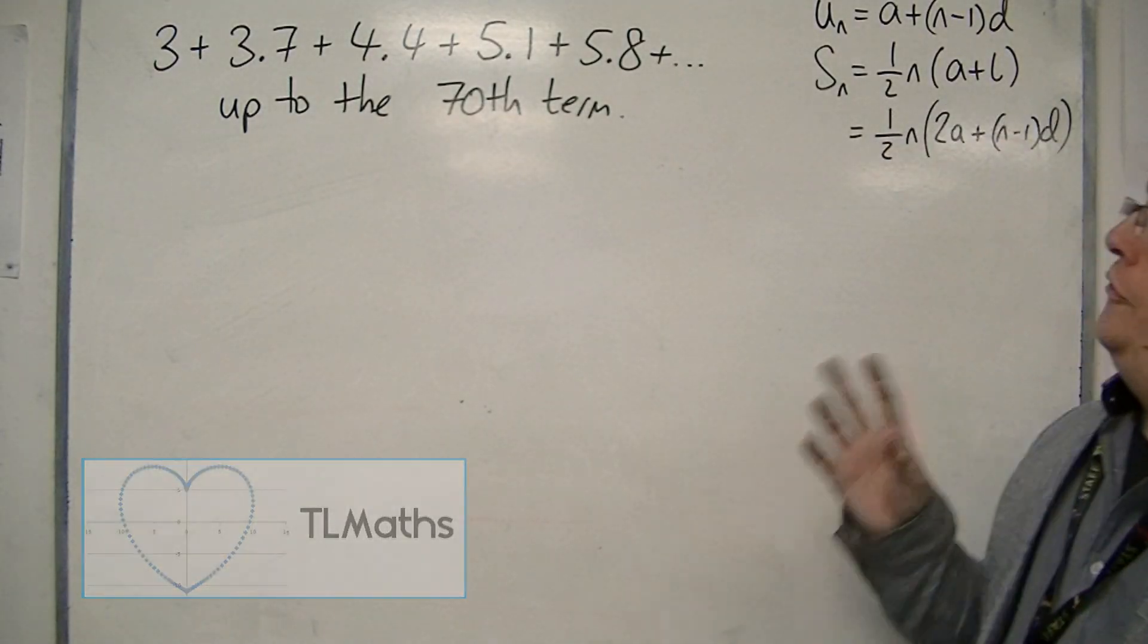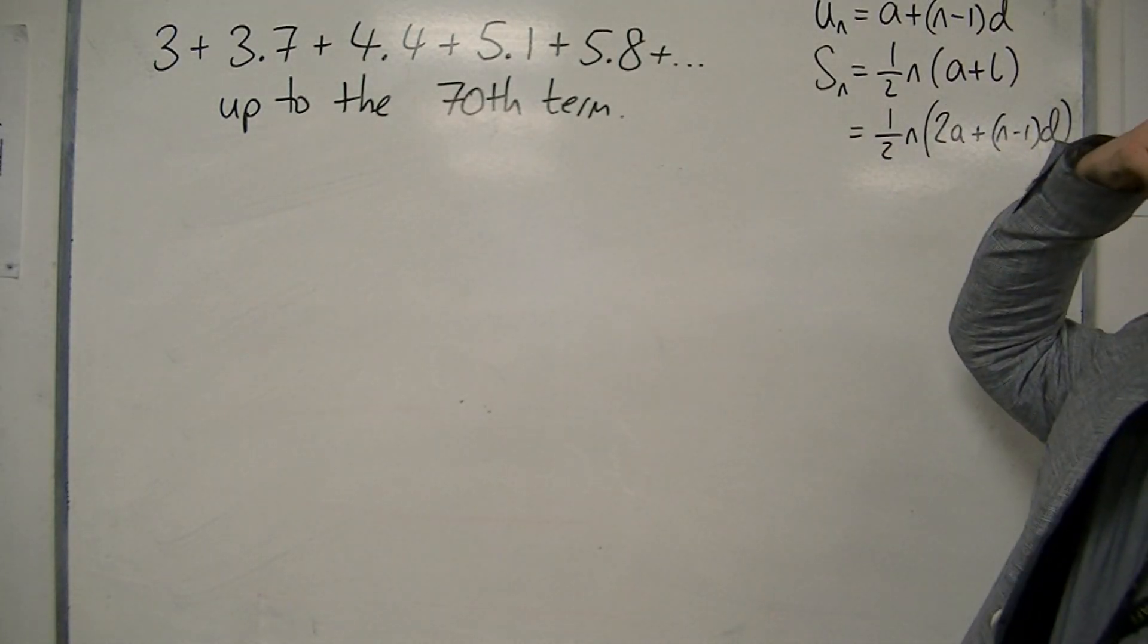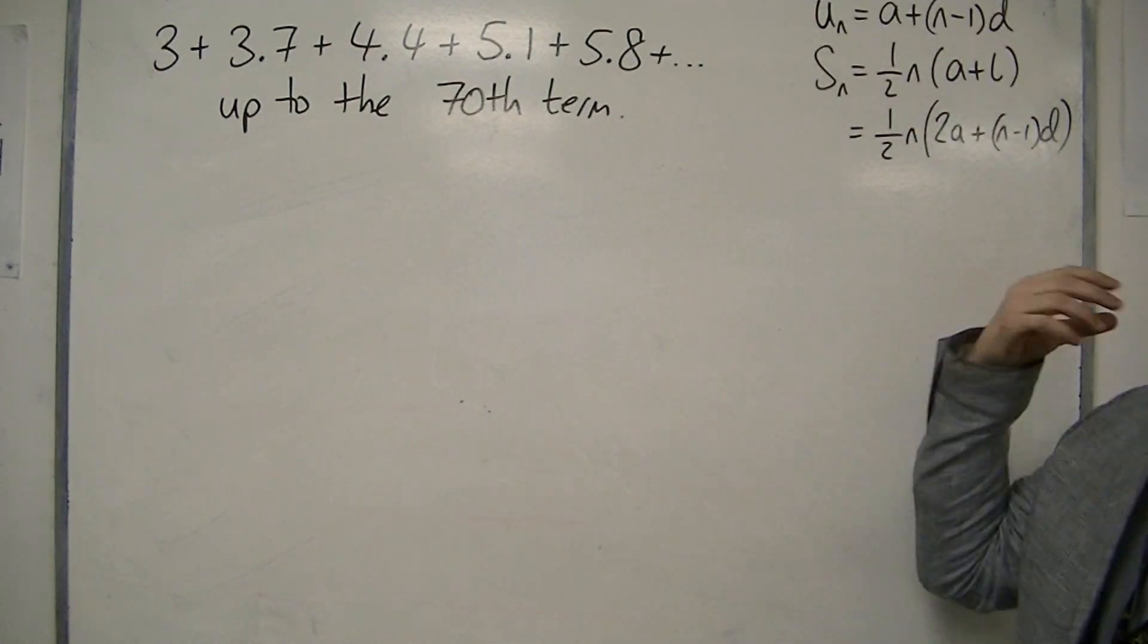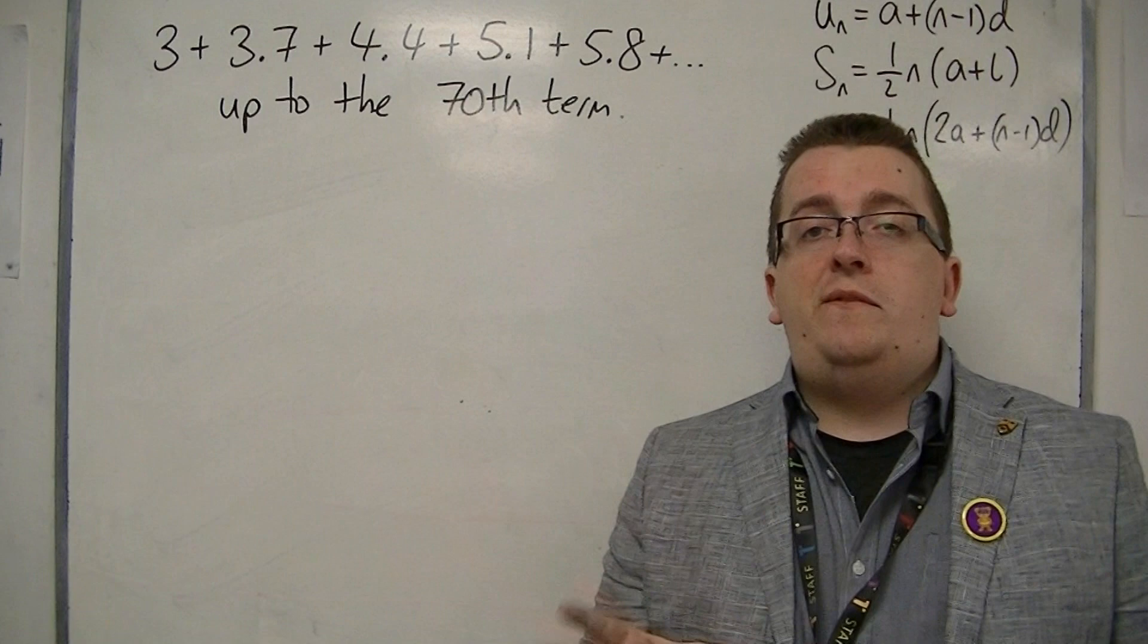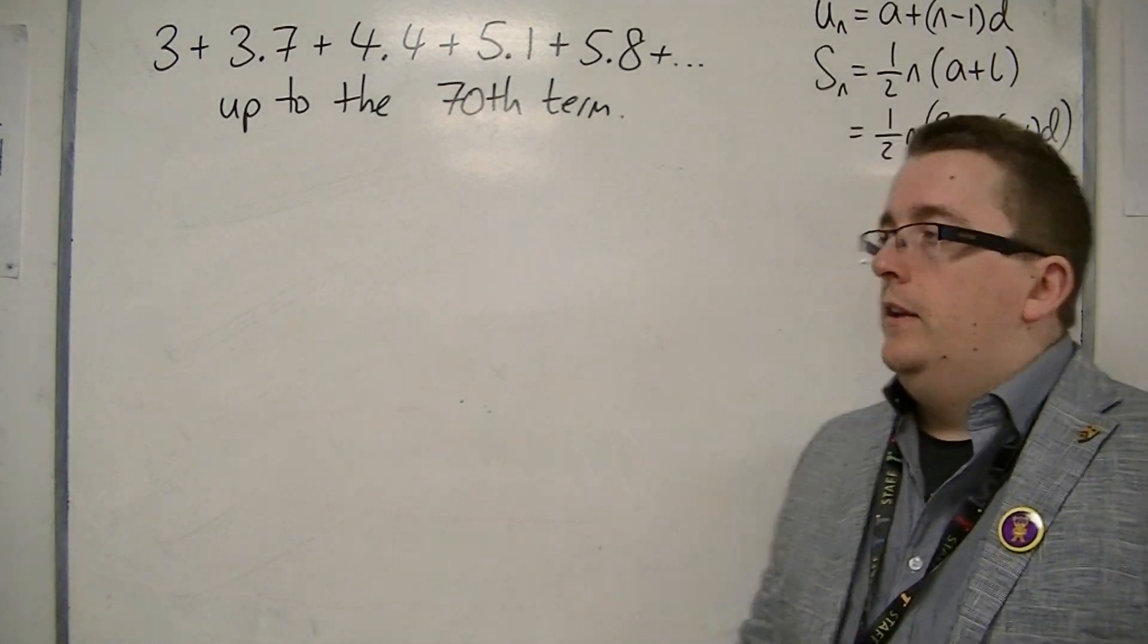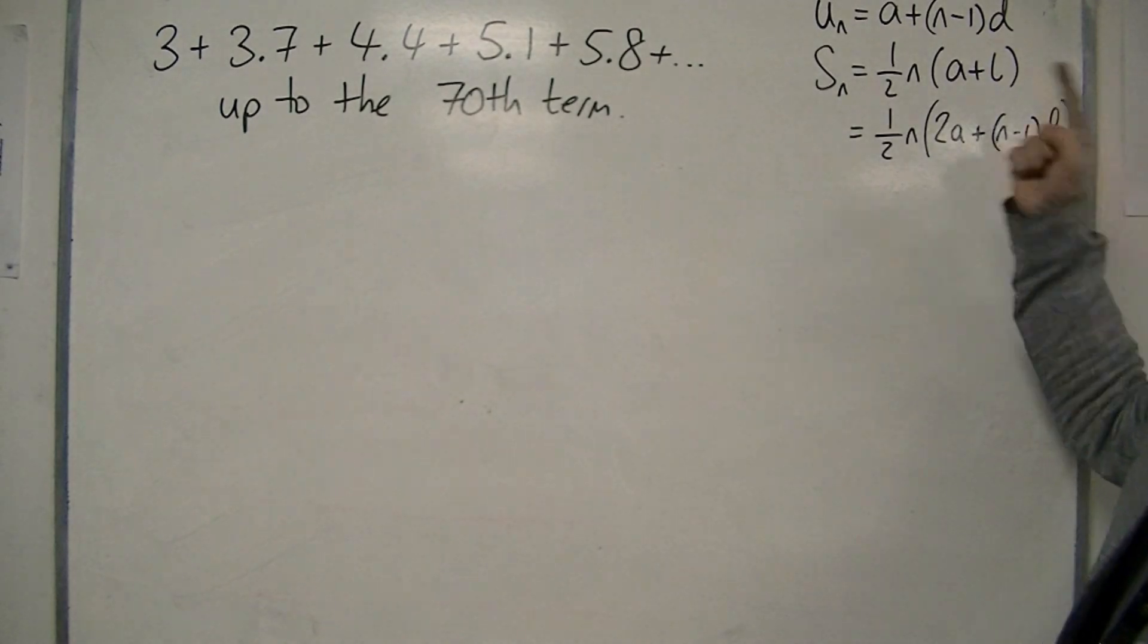So let's say I want to sum this series: 3 plus 3.7 plus 4.4 plus 5.1 plus 5.8 and so on, up to the 70th term. And I want to add all of these numbers together. So I'm going to use one of these formulas.